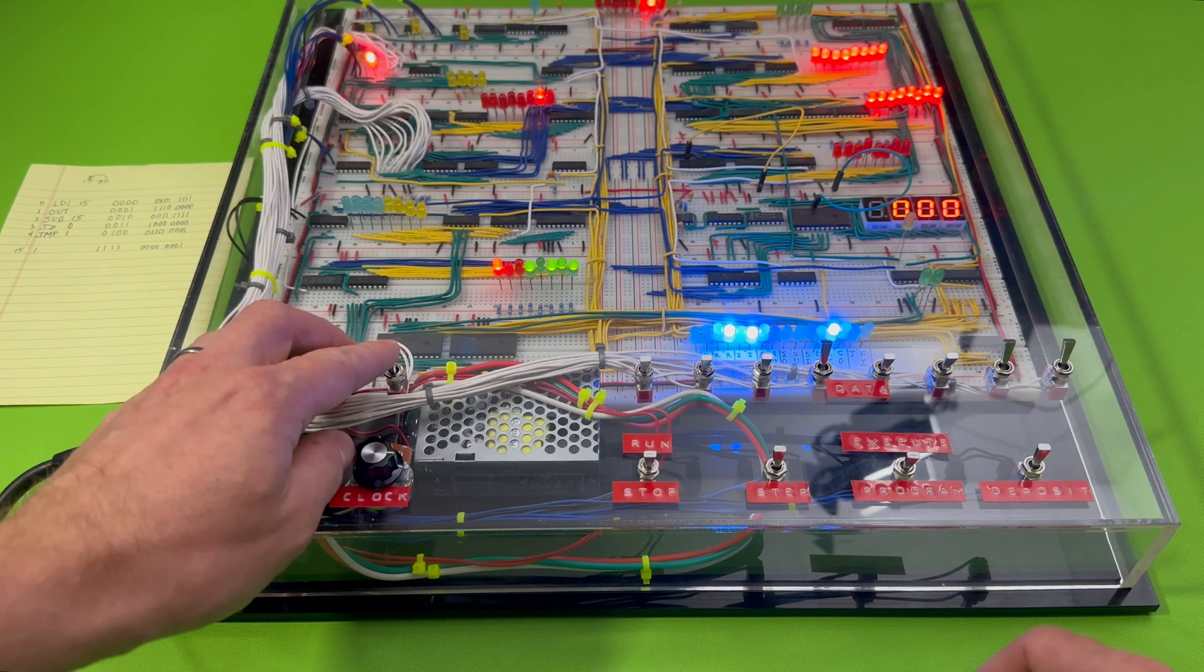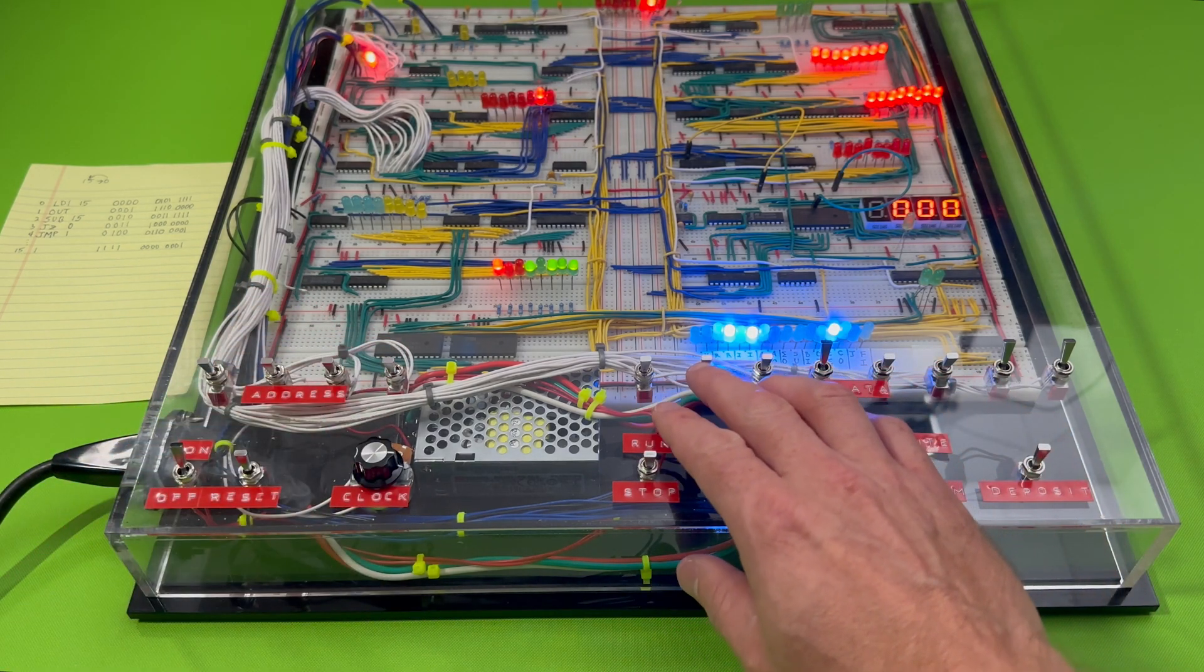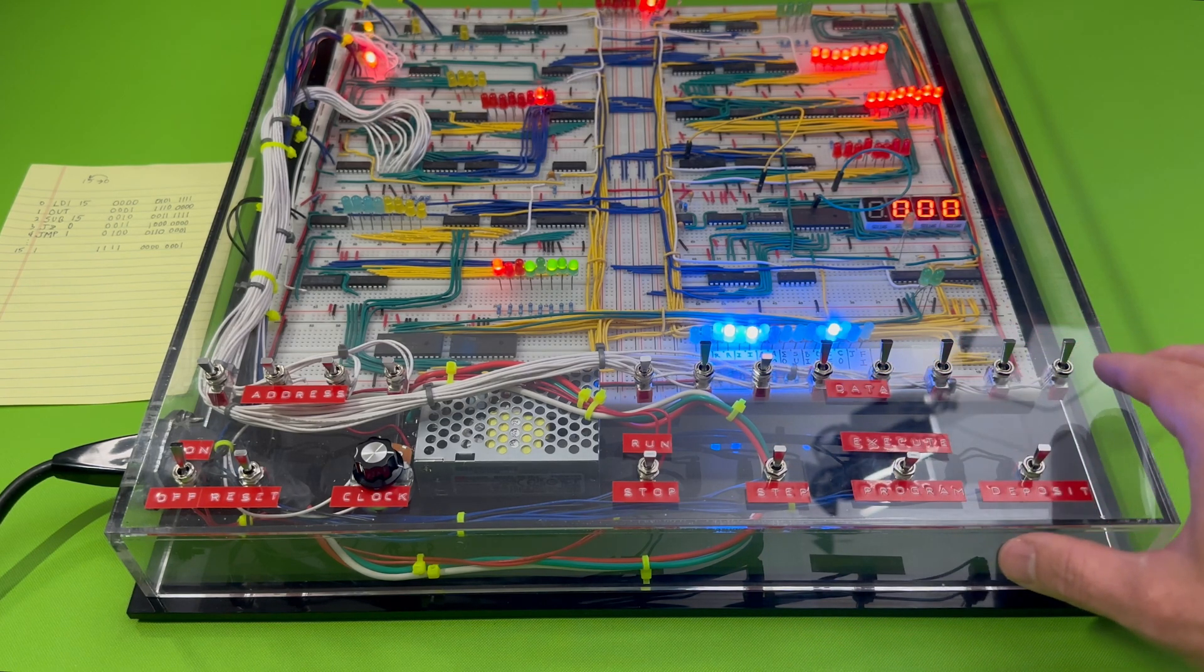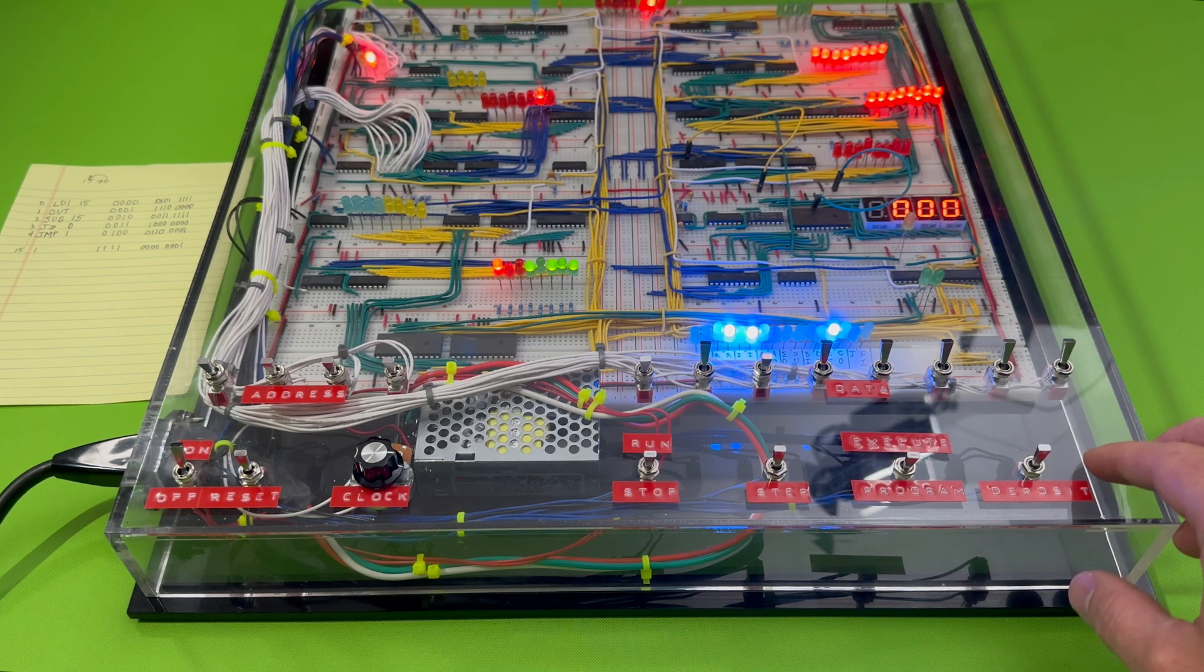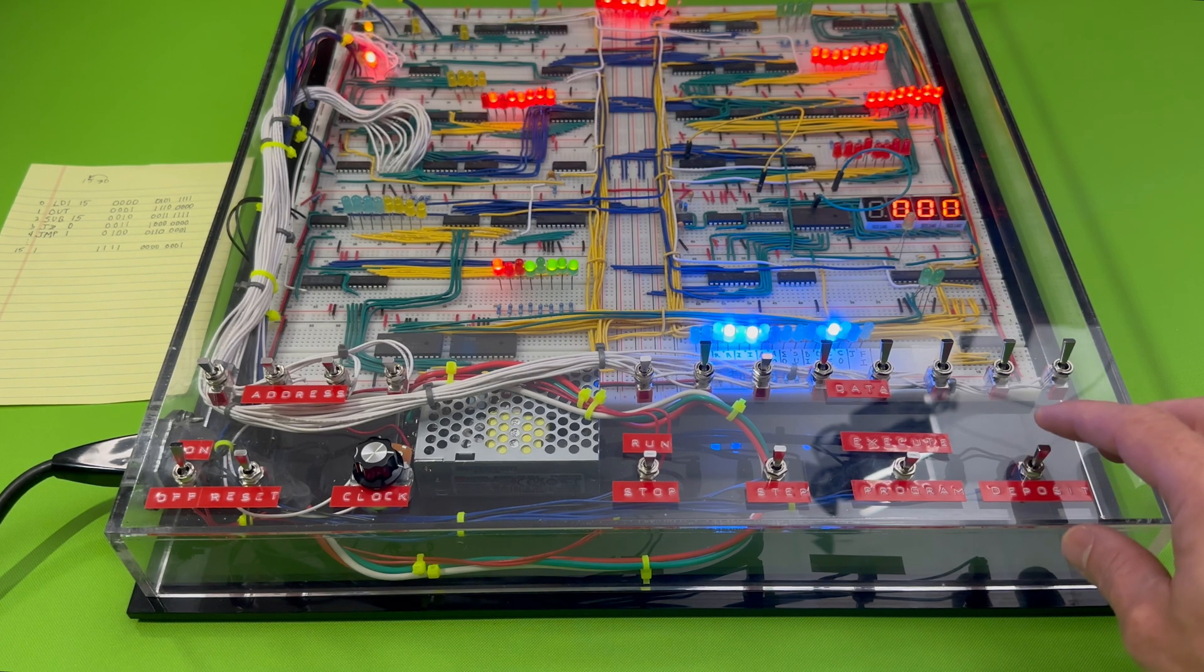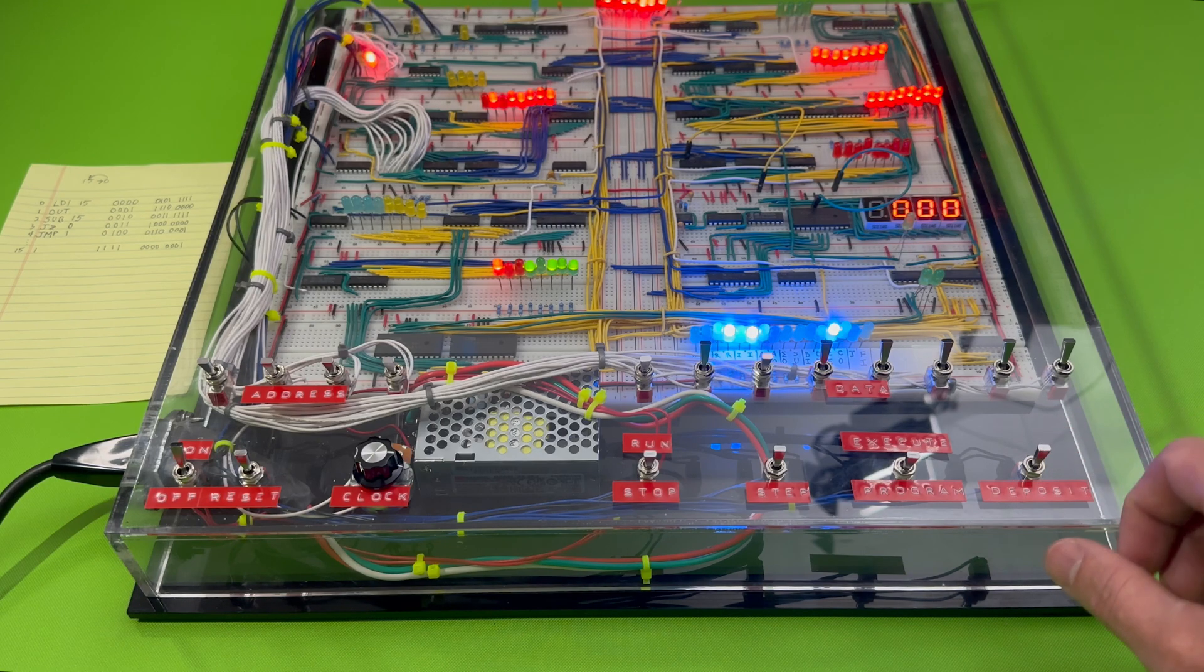Select RAM address 0 and select the value of 0, 1, 0, 1, 1, 1, 1, 1 for the data. Toggle the deposit switch. Notice that the RAM address and value have been updated.